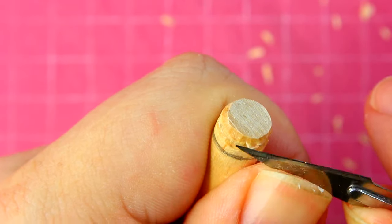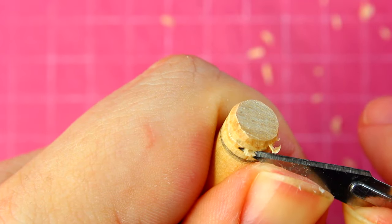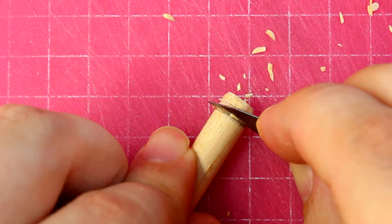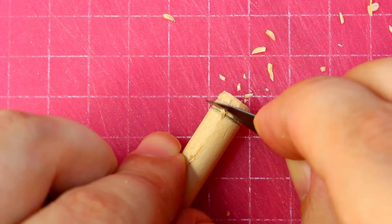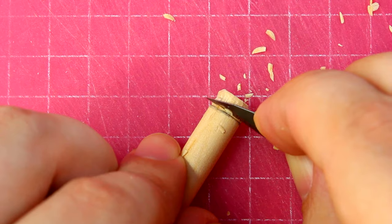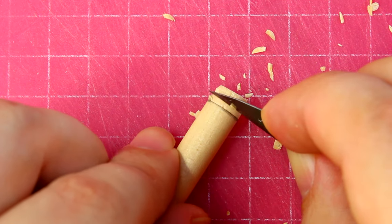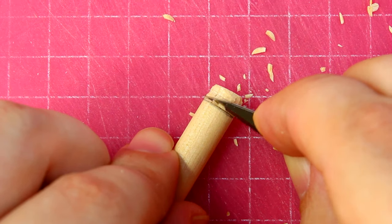Keep the dowel rotating in your hand while you're doing this to help keep things even. At this stage, your cuts really don't have to be very precise or tidy. All you want to do is remove the bulk of the material. We'll be refining the shape later on, so don't worry about those little facets left behind by the knife.